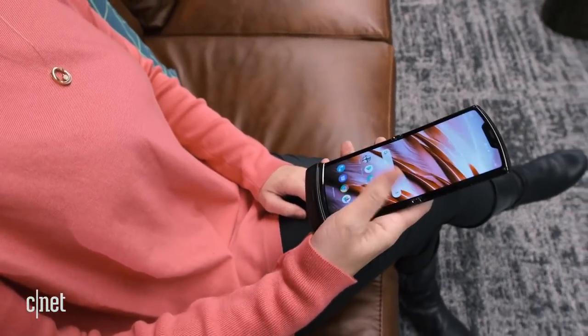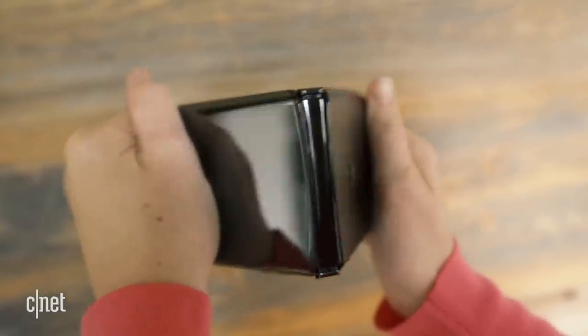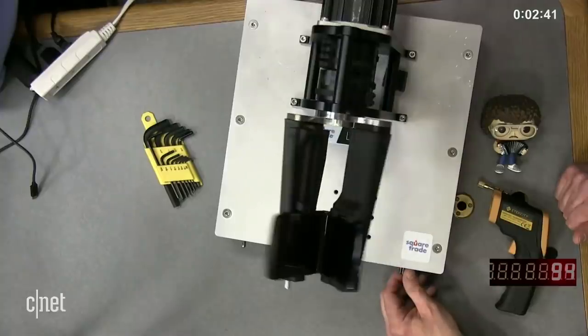Then in February of this year, Motorola released the Razr with a foldable screen, and CNET's video team decided to test the display's durability. My colleague Chris Parker used a foldbot and attempted to open and close the phone a hundred thousand times. But that's not quite what happened.